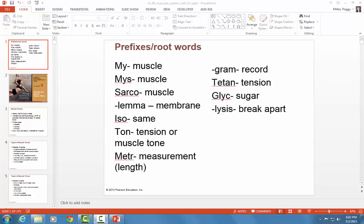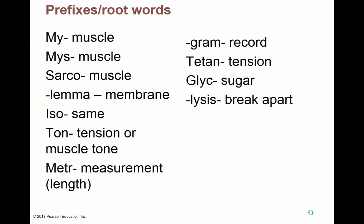First slide. I've got a whole bunch of prefixes, root words, and suffixes you're going to see in this unit. The first three all mean muscle. Anytime you see MY, MYS, or Sarco, it means muscle. You're going to see MY, MYS, and Sarco in a whole bunch of the words throughout this PowerPoint — they just mean relating to muscle.